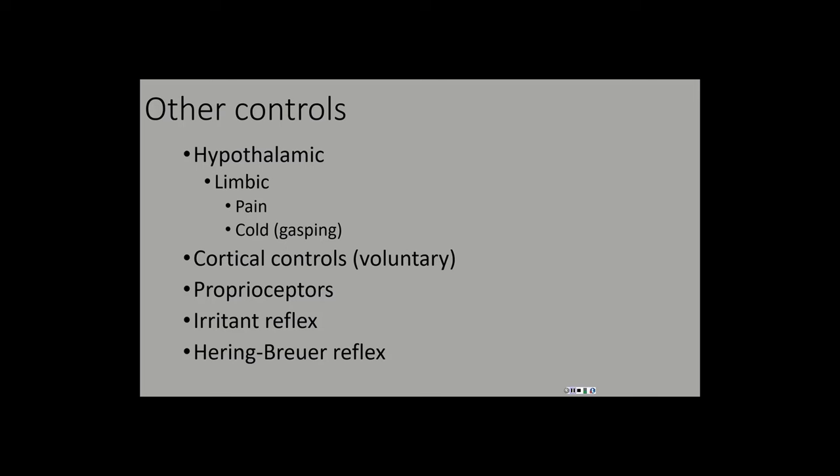There are other controls for breathing beyond the main ones. Hypothalamic control: the hypothalamus can stimulate breathing and is tied into the limbic system, our emotional response center. Pain and cold both affect the limbic system and can influence breathing. For example, when you are in pain or fall into cold water, you have that characteristic gasping breath.